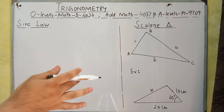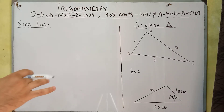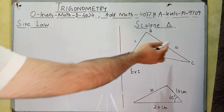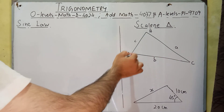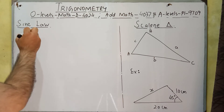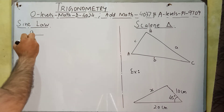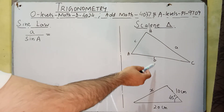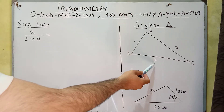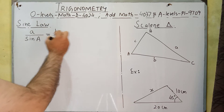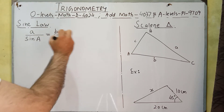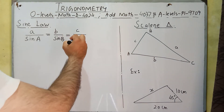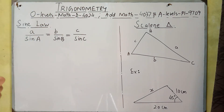In sine law, the ratio between any side and the sine of its opposite angle is always equal. For example, a is a side and capital A is its opposite angle, giving us a over sin A. Similarly, b over sin B, and c over sin C — this is the sine law.